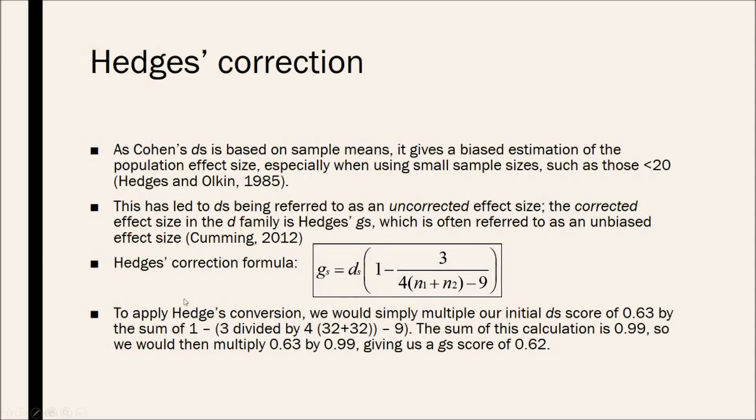So, Hedges' correction formula is basically the DS times the percentage or the probability which you would get. To apply Hedges' conversion, we will simply multiply our initial DS score of 0.63 by the sum of 1 minus 3 divided by 4, times open bracket 32 plus 32, which is the sample size, close bracket, close bracket, minus 9, close bracket. Then the sum of this calculation is 0.99, so we would simply then multiply 0.63, our initial DS score, by 0.99, giving us a GS score of 0.62, which is now an unbiased effect size.